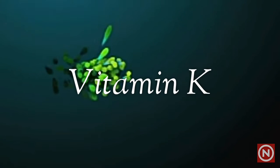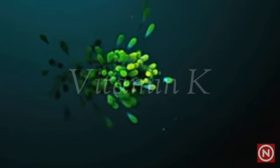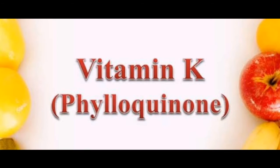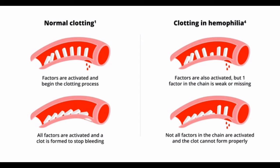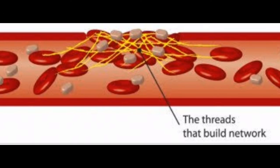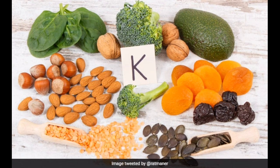Vitamin K: constituents — phylloquinone K1, menaquinone K2. Deficiency disease — lack of clotting of blood, lack of tissue renewal. Sources — green leafy vegetables, etc.